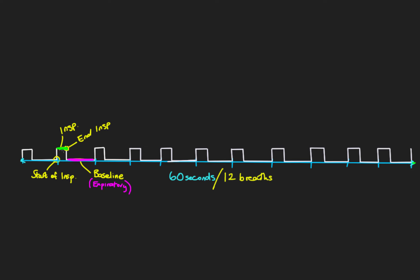With twelve breaths in our sixty-second period, we can talk about a total cycle time. Total cycle time is how long the entire breath takes — not just the inspiration phase, but the whole phase from the start of one breath to the start of the next. If we have twelve breaths per minute, sixty divided by twelve gives us a total cycle time of five seconds per breath.